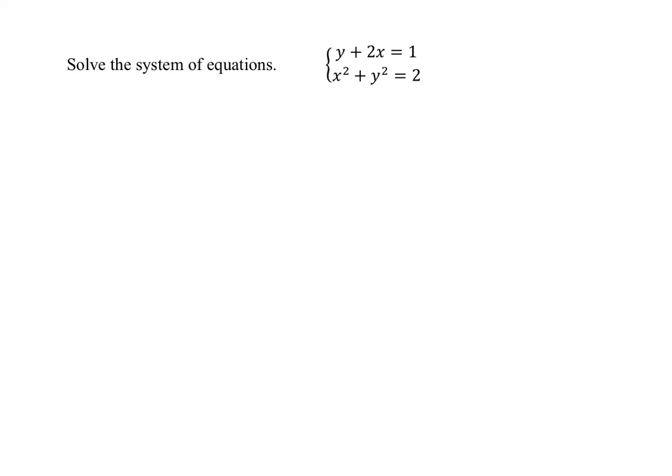In this example, we want to solve the system of equations that we are given: y plus 2x equals 1, and x squared plus y squared equals 2. Remember, when we are solving a system, that means we are looking for the intersections. So our answer, or answers, will be coordinates—they will be ordered pairs.